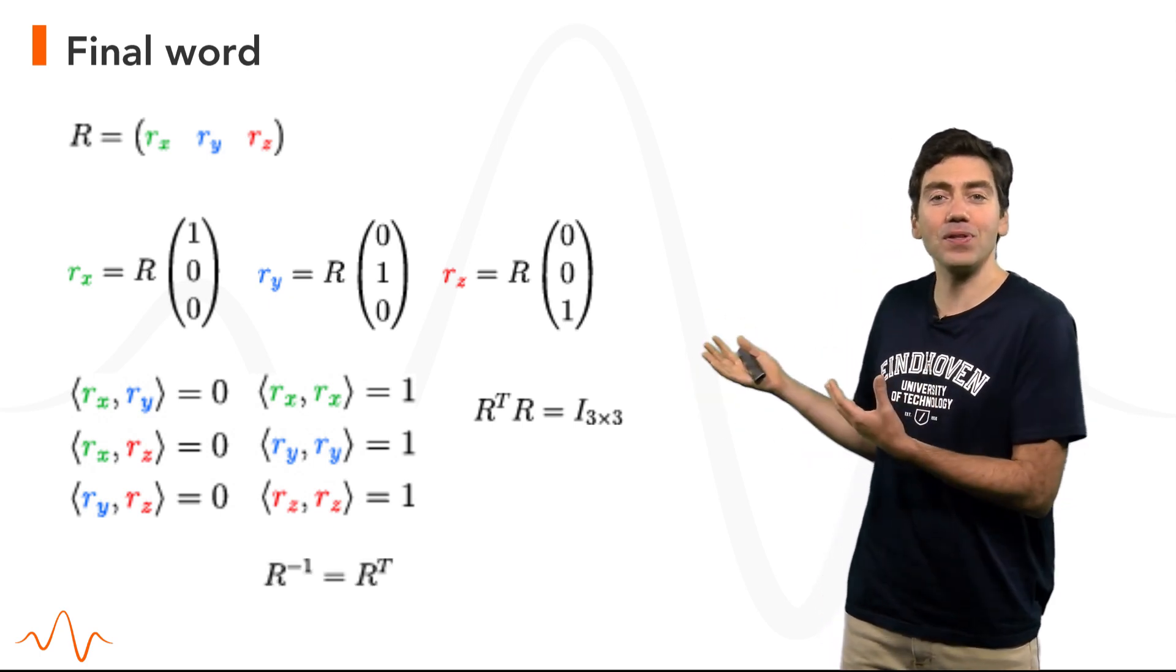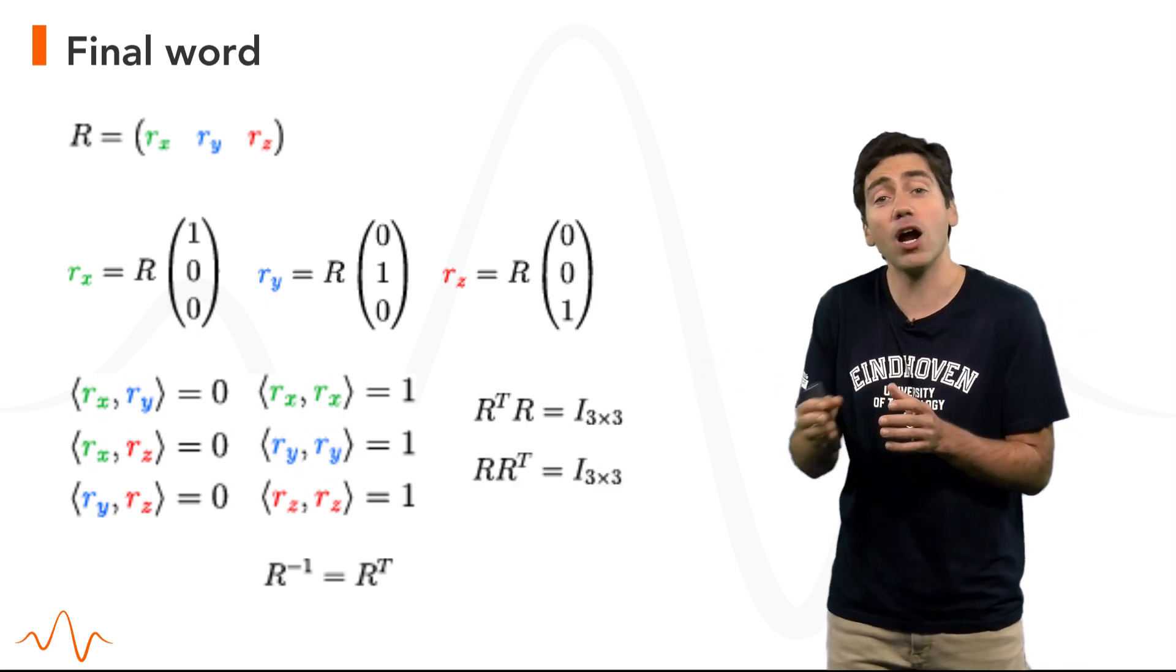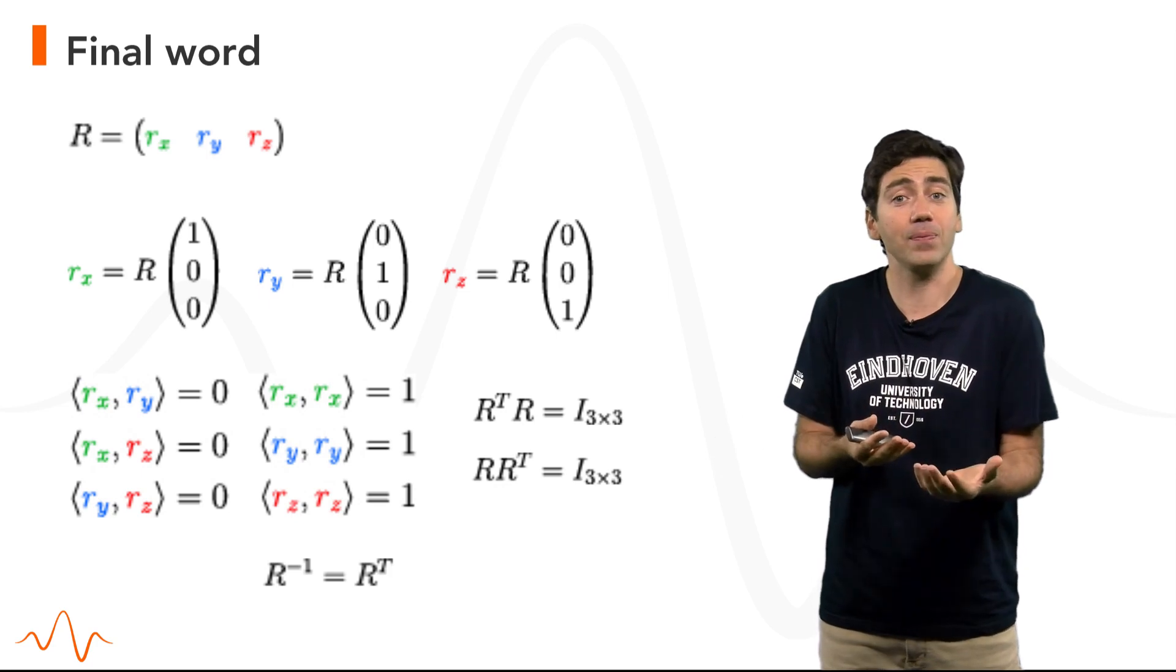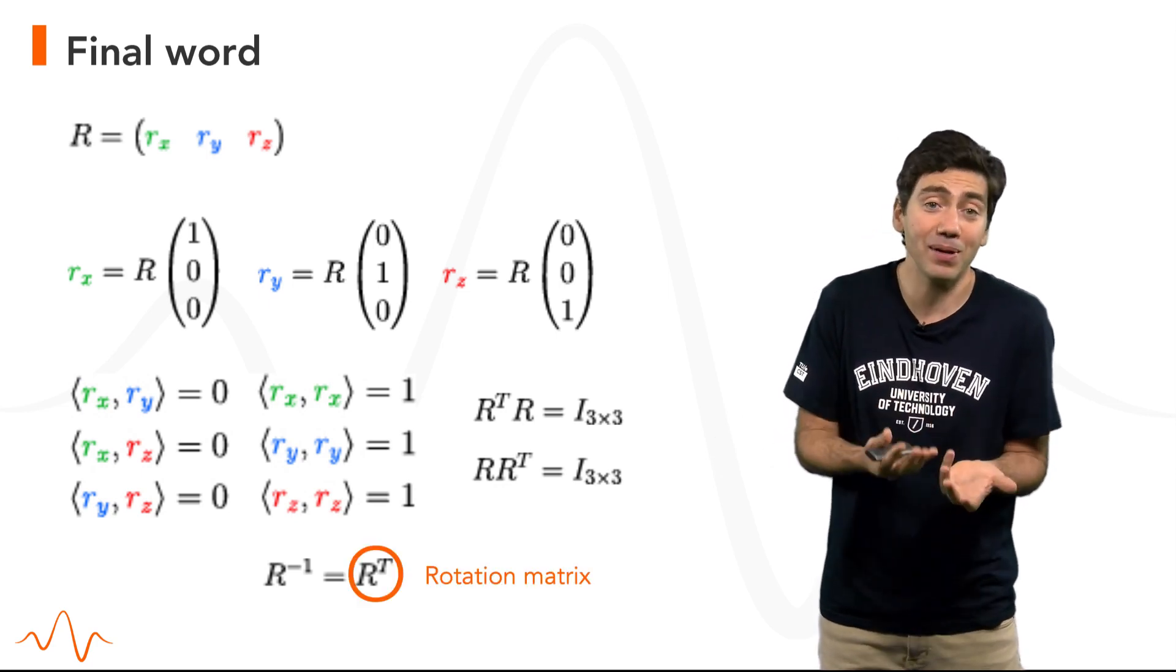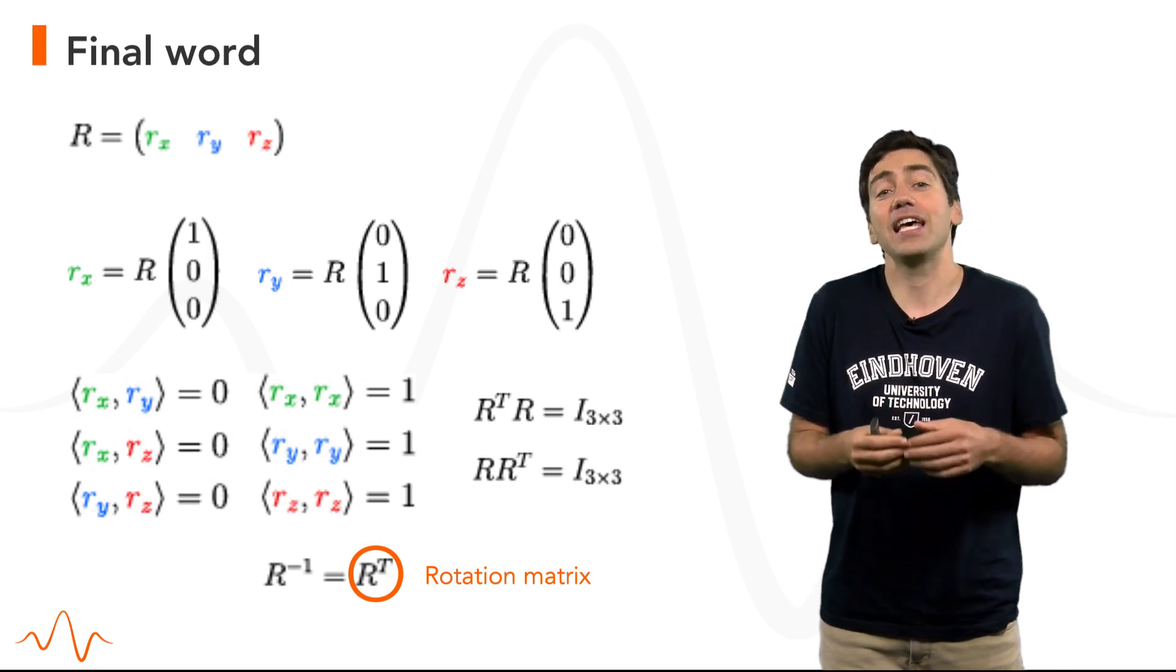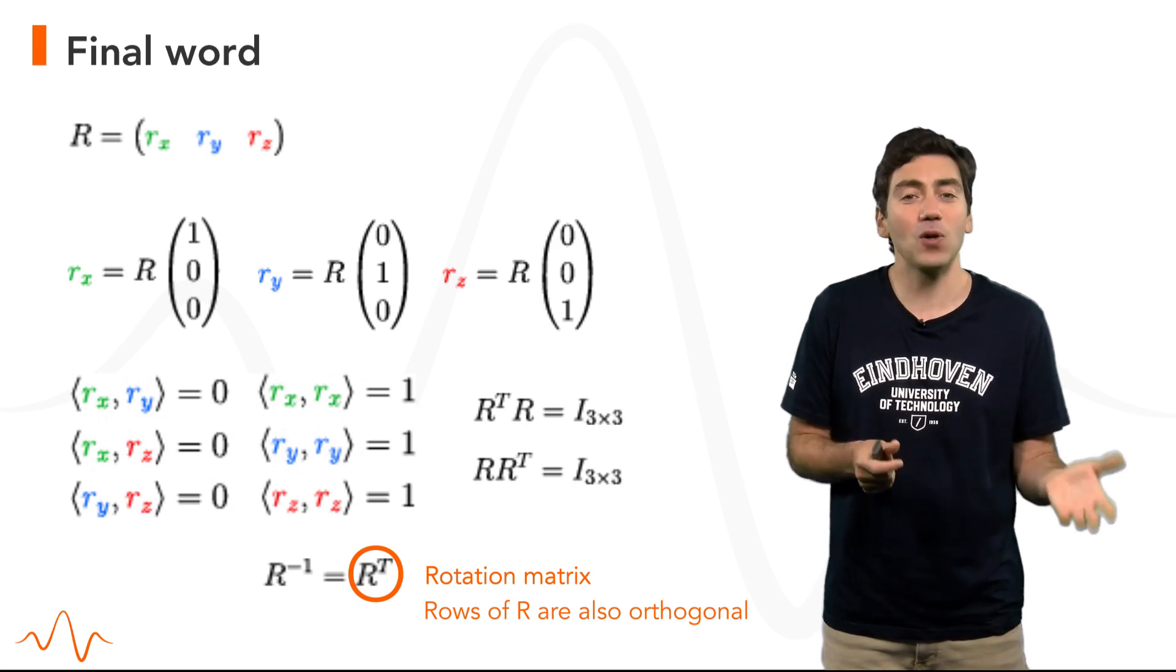But then, the inverse of this rotation matrix is its transpose. And therefore, R times R transpose is also the identity. Then R transpose must also be a rotation matrix, meaning that the rows of R must also be orthogonal, pretty much as the columns.